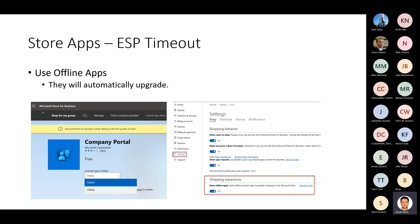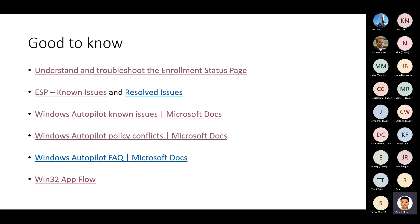From the previous good-to-know links, don't mix MSI and Win32 apps together because you cannot use the same installer for targeting both app types — it locks the trusted installer. This is documented in the ESP known issues docs under best practices and frequently asked questions.